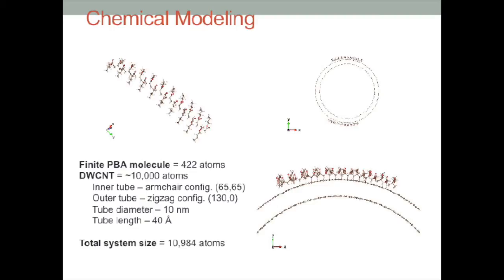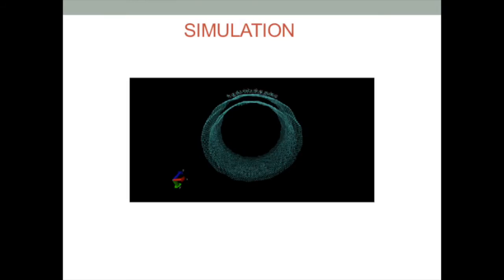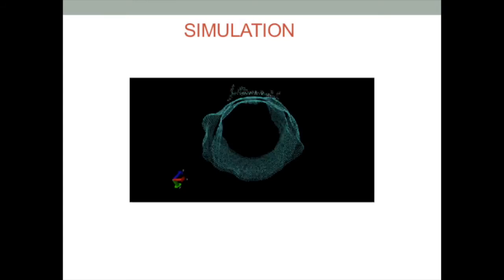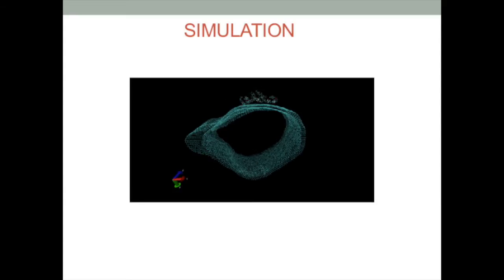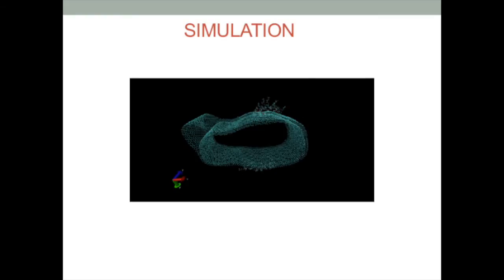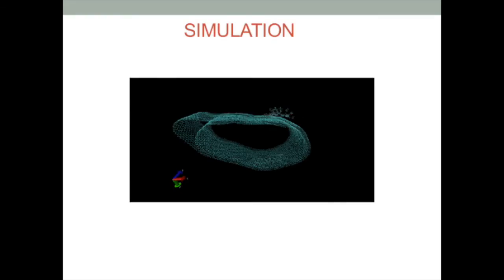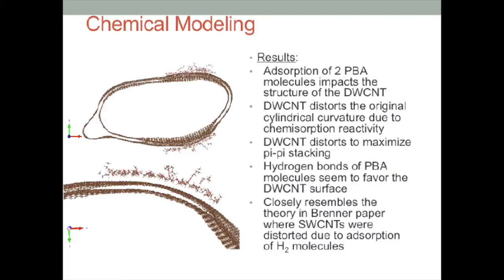Notice how the CNT curvature begins to distort due to the equilibrium process in NVE. As the simulation continues, the CNT structure begins to distort to maximize the pi-pi stacking between the inner and outer tube. As shown in the simulation, the absorption of the PBA molecules clearly impacts the CNT structure. The CNT distorted due to the chemisorption reactivity to try and maximize the pi-pi stacking. The distortion shown in our model closely resembles the theoretical and computational predictions documented in a paper written by Donald Brenner, a well-known researcher in atomistic modeling.